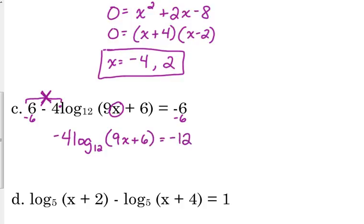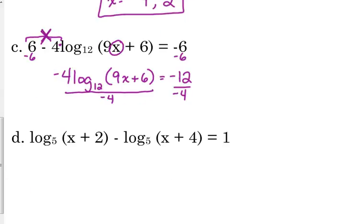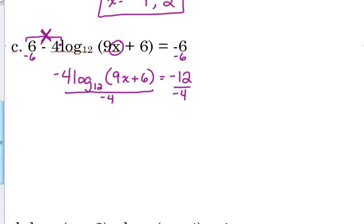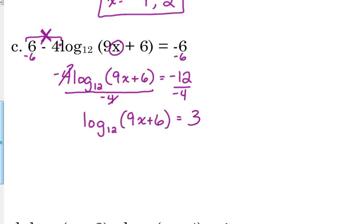So, negative 6 minus 6 is negative 12. So, we're multiplying our logarithm by negative 4, so it kind of makes sense to divide by negative 4 to get rid of that. Okay, so that's gone. So, we've got log base 12 of 9x plus 6 is equal to 3. So, now we have the logarithm by itself. Our variable is stuck inside of it. The only way to get the variable out of the logarithm is to express this in exponential form. So, that's what we're going to do. We're going to write in exponential form.